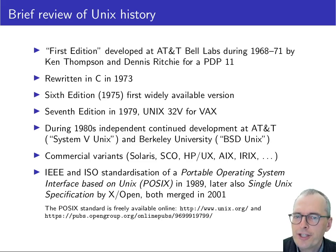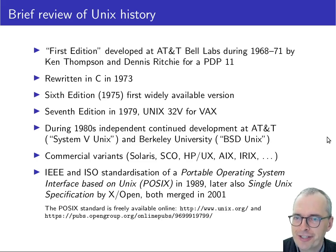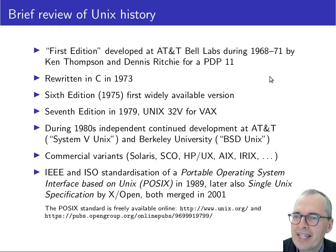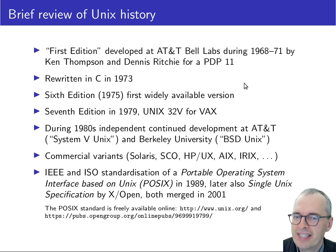The Unix environment has been around for about half a century already, so it's a quite venerable operating system. The first version was written in the early 1970s in assembler at AT&T Bell Labs by Ken Thompson and Dennis Ritchie, and then in 1973 it was rewritten in C.